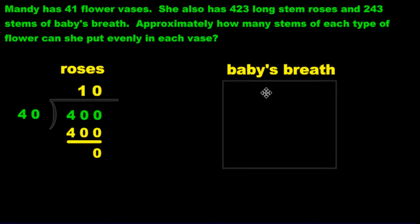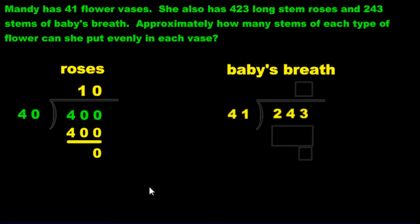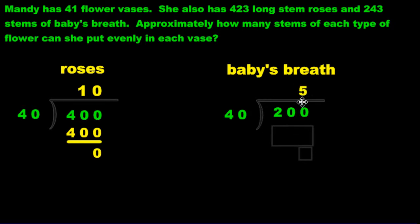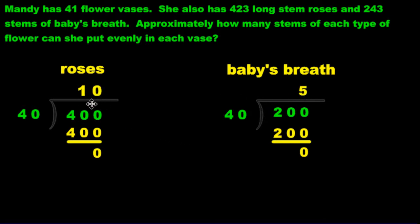Now for the baby's breath: we have 243 and we're going to divide among 41 vases. We put the division symbol, change both numbers, keep the first digit. Then we ask ourselves: 40 goes into 200 how many times? Five times — because 5 times 40 is 200. And 200 minus 200 is zero. So we have about 5 baby's breath and 10 roses inside each vase to make a pretty good looking arrangement.